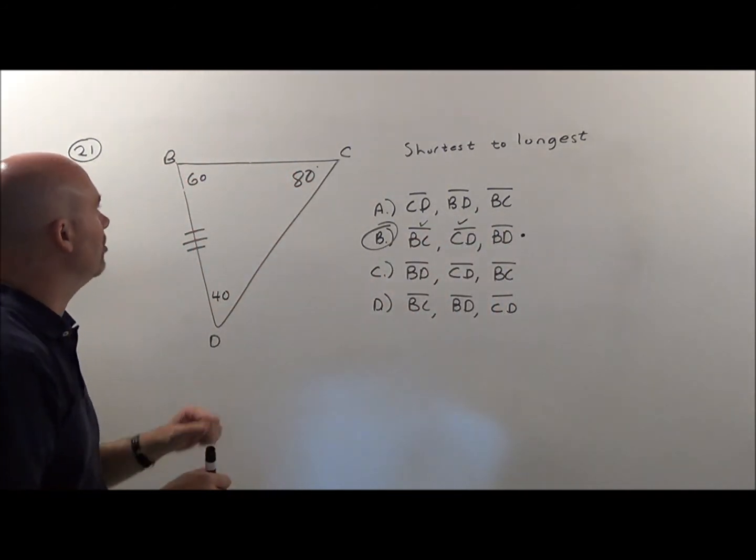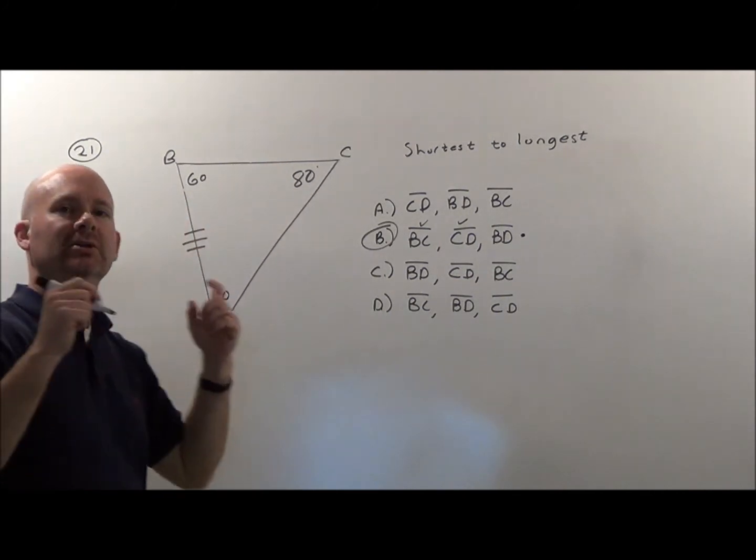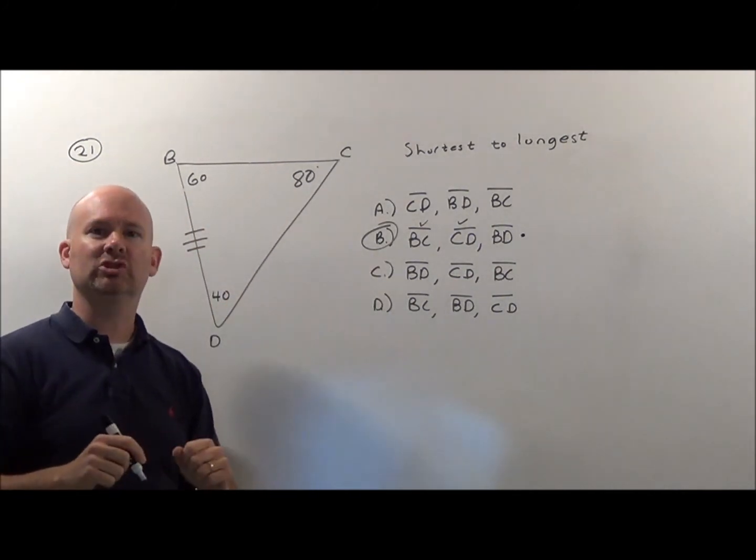Check, and then we already said BD was the longest side across from the 80, so there we have it. The answer is choice B.